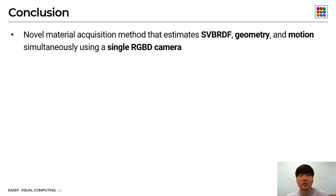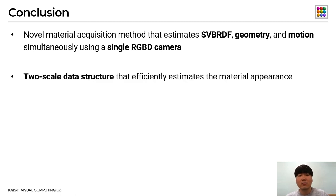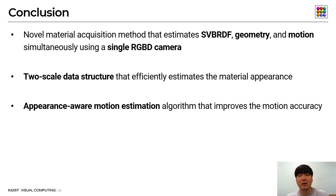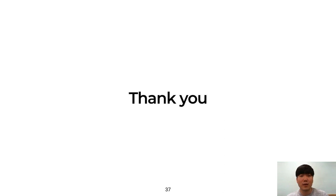In conclusion, we have presented a novel material acquisition method that estimates SVBRDF, geometry, and motion simultaneously using a single RGB-D camera. We have proposed a two-scale data structure that efficiently estimates material appearance. We also demonstrate that our appearance-aware motion estimation algorithm can improve motion accuracy as well. Thank you.